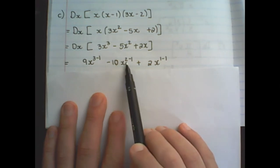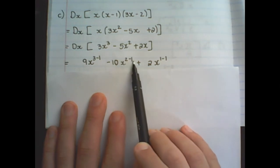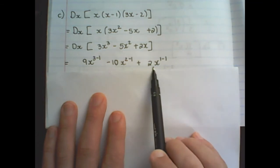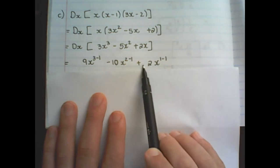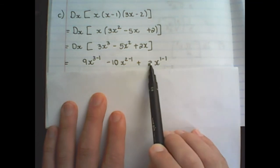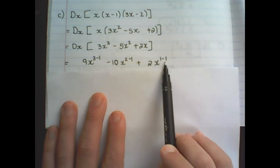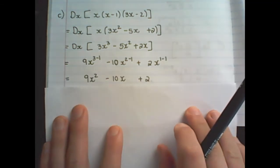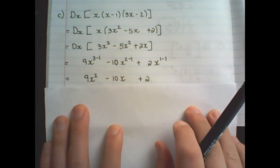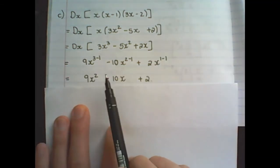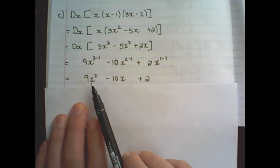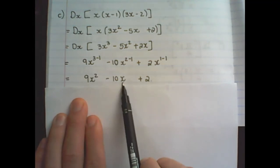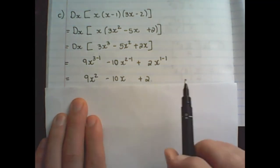In the exponent 2 minus 1. And 2 multiplied by 1 stays 2, and the exponent is 1 minus 1 which gives 0. Therefore my final differentiation is 9x squared minus 10x plus 2.